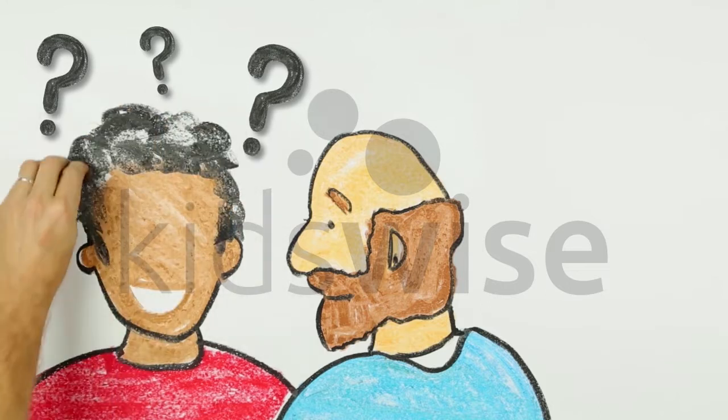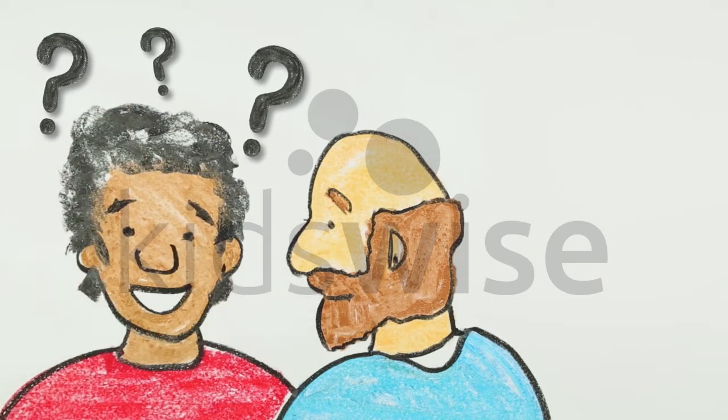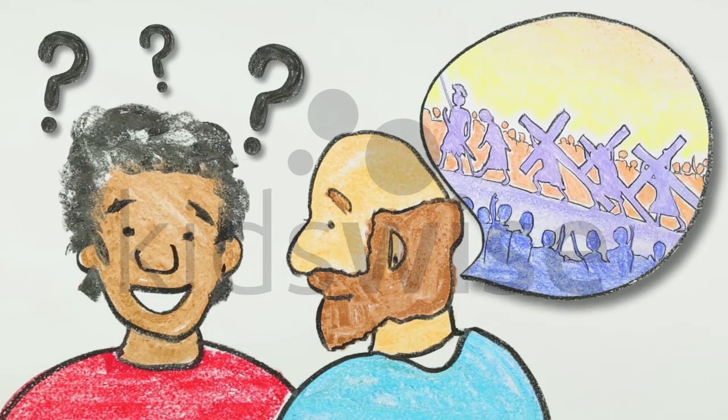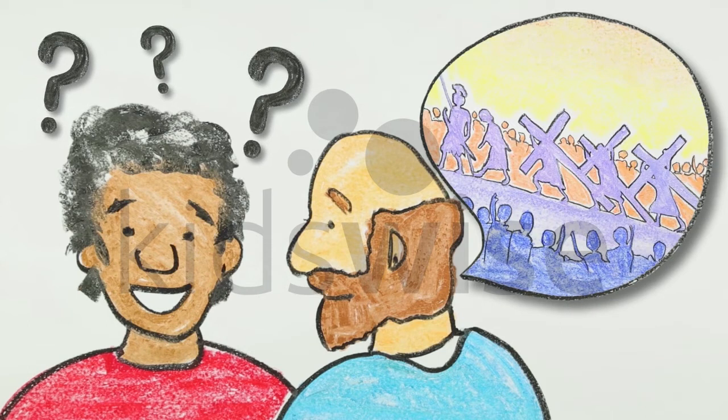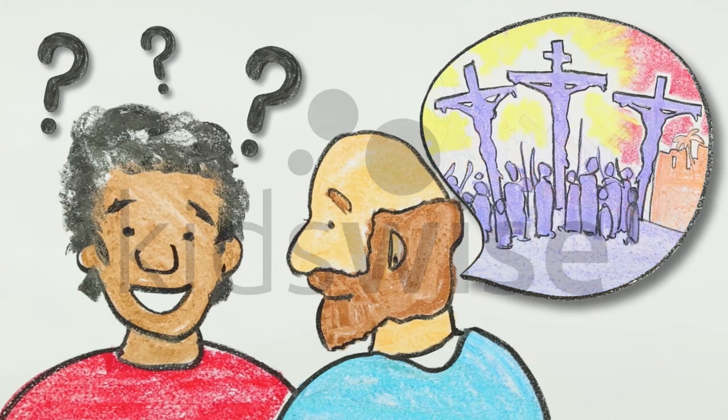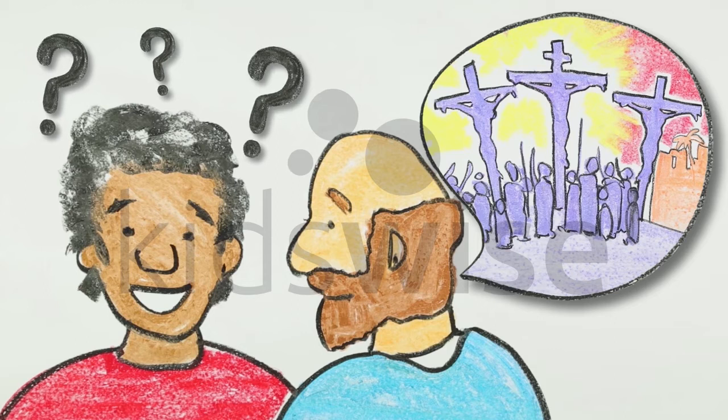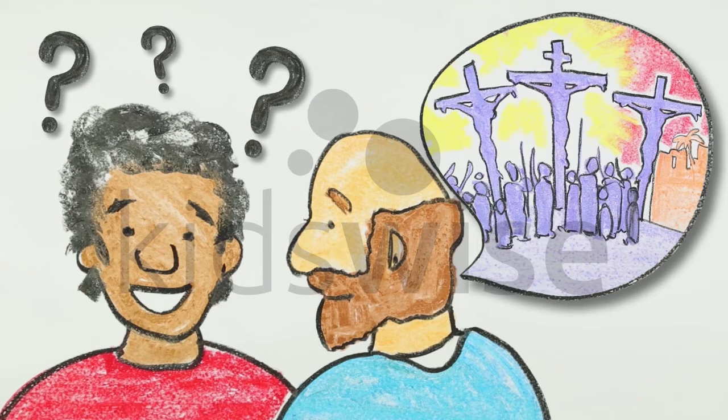So Philip explained that Isaiah was talking about Jesus. Jesus was led away to be killed, but he never said a word in protest. Even though his punishment was unfair, he never cried out for them to stop.